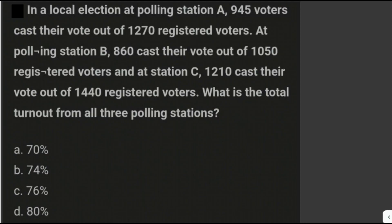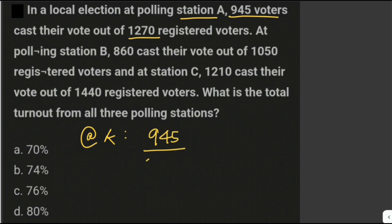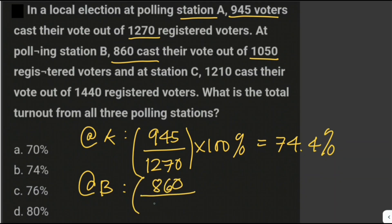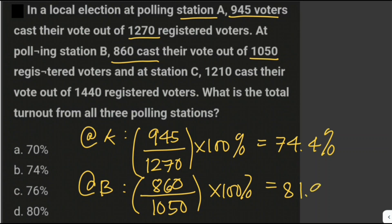The turnout at polling station A is 945 voters out of 1,270 registered voters. The percentage for turnout at station A is 945 divided by 1,270 times 100%, which equals 74.4%. The turnout at polling station B is 860 out of 1,050 registered voters, so that is 860 divided by 1,050 times 100%, giving us 81.9%.